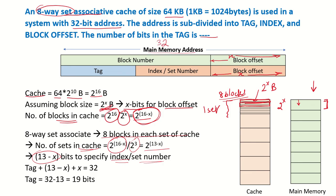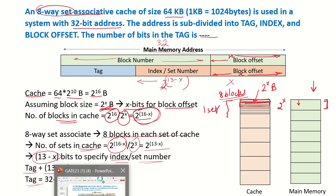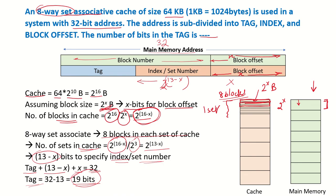The main memory address is 32 bits and consists of the block number and block offset. When mapped to the cache, we need 13 minus x bits for the index and x bits for the block offset. So: tag + (13 minus x) + x = 32, which gives tag = 19 bits. The tag requires 19 bits.